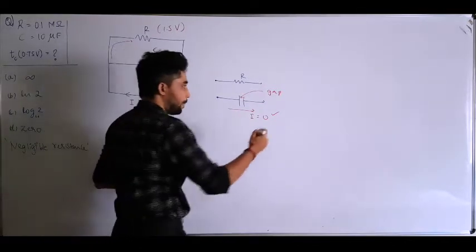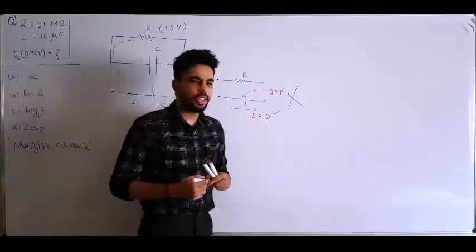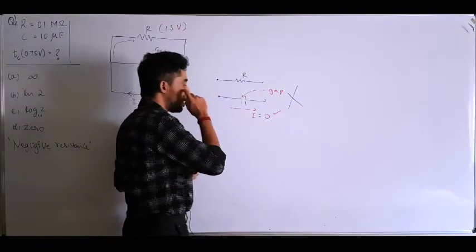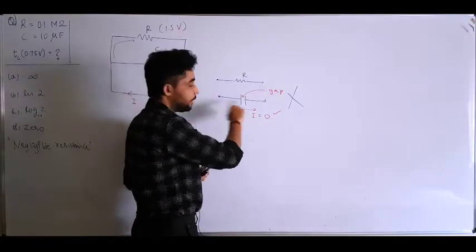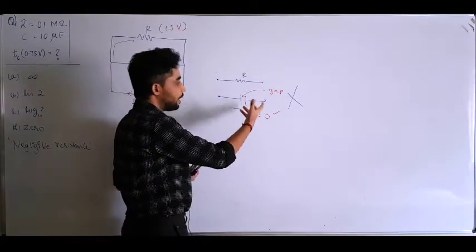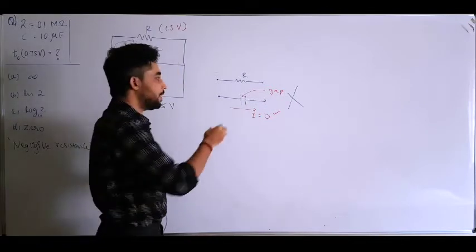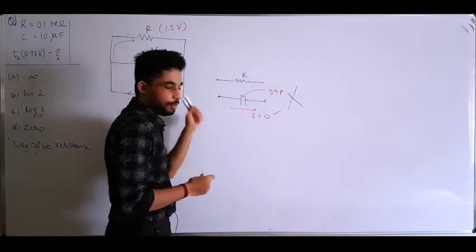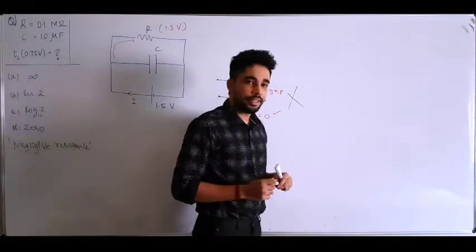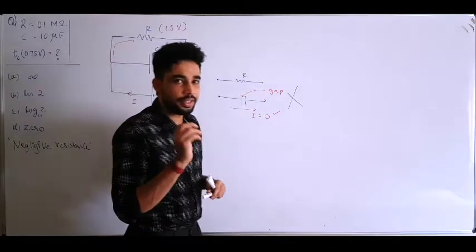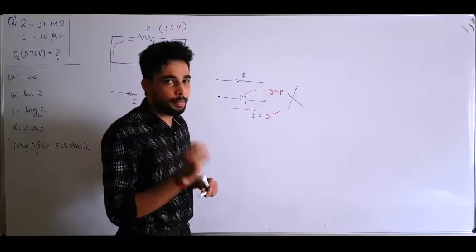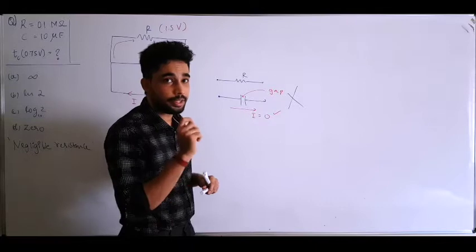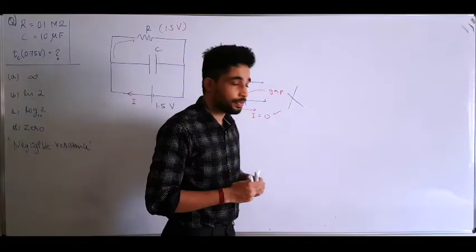Now we have a problem: if there is no current flowing through the capacitor path, there won't be any potential built up across it, which would also be wrong. That means there has to be charge buildup and potential built up across the capacitor.